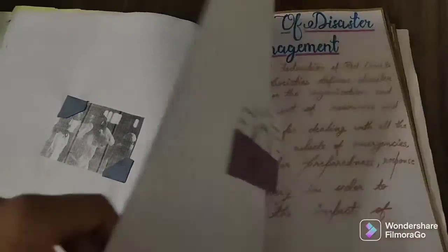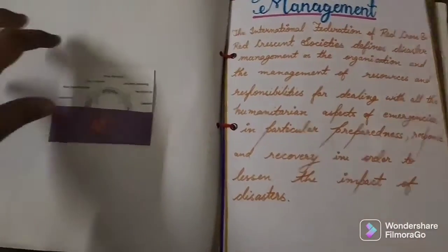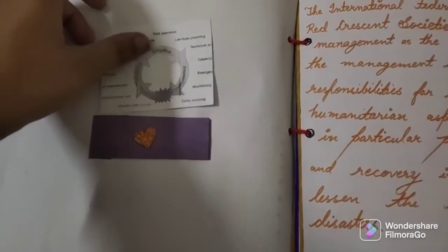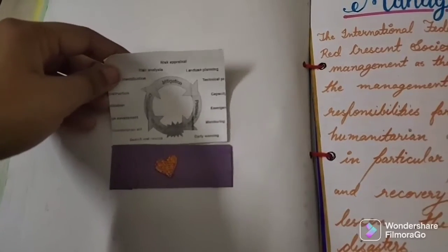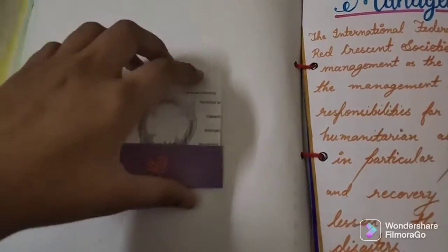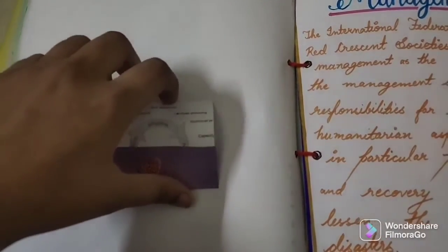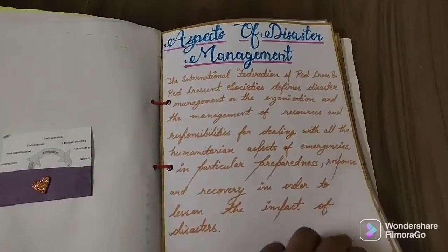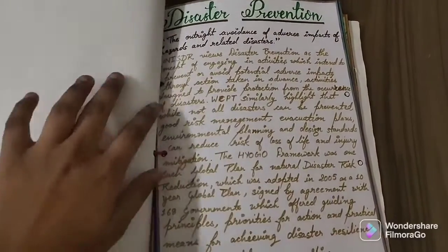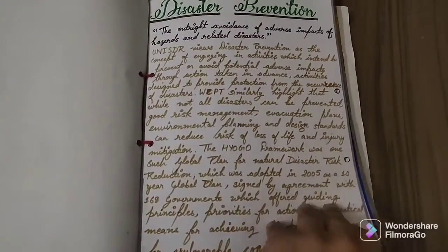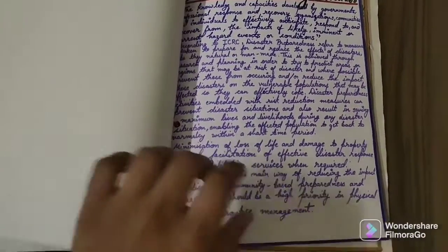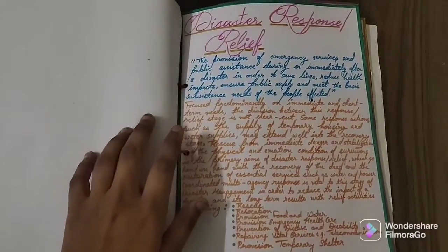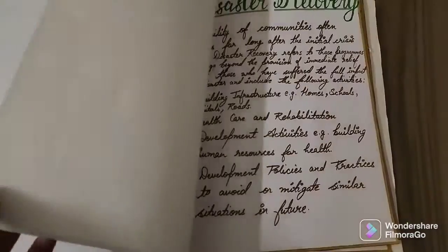Now it is the aspects of disaster management, and this is the disaster management cycle. It covers disaster prevention, disaster preparedness, and disaster response and relief.